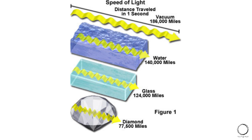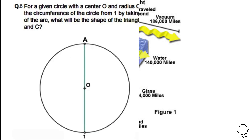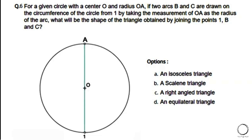Next: For a given circle with center O and radius OA, if two arcs B and C are drawn on the circumference from one point taking OA as the radius, what will be the shape of the triangle obtained by joining those points? Options: a) isosceles triangle, b) scalene triangle, c) right angle triangle, d) equilateral triangle. The right answer is option D — an equilateral triangle.